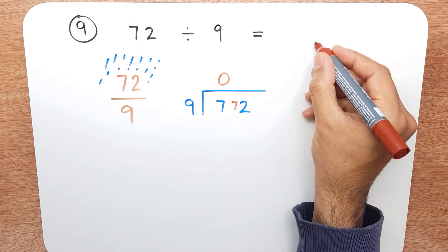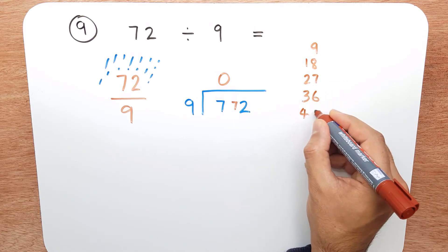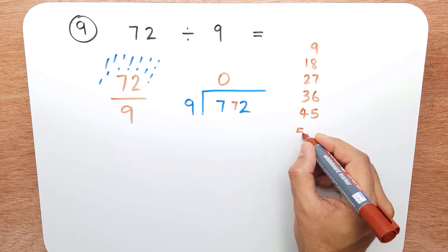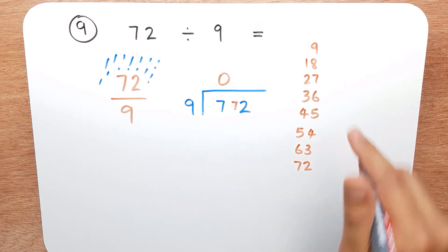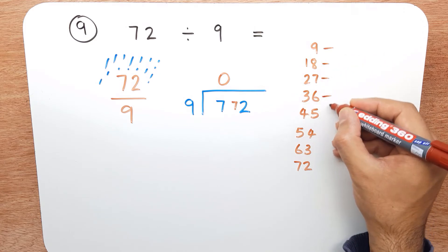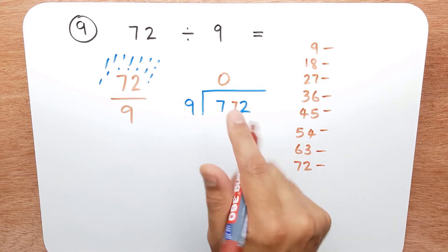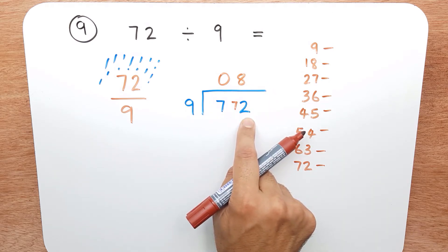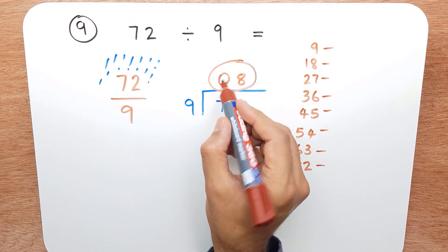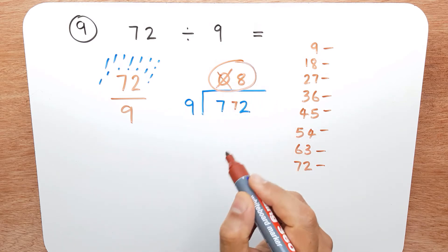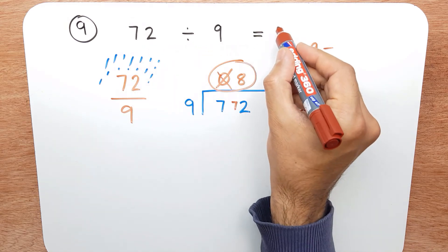So now it's how many nines are there in seventy-two. We do the nine times table: nine, eighteen, twenty-seven, thirty-six, forty-five, fifty-four, sixty-three, seventy-two — we can stop there. Counting up: one, two, three, four, five, six, seven, eight. So there are eight nines in seventy-two. Because there's no remainder, our answer is eight — we ignore the leading zero. So seventy-two divided by nine is eight.